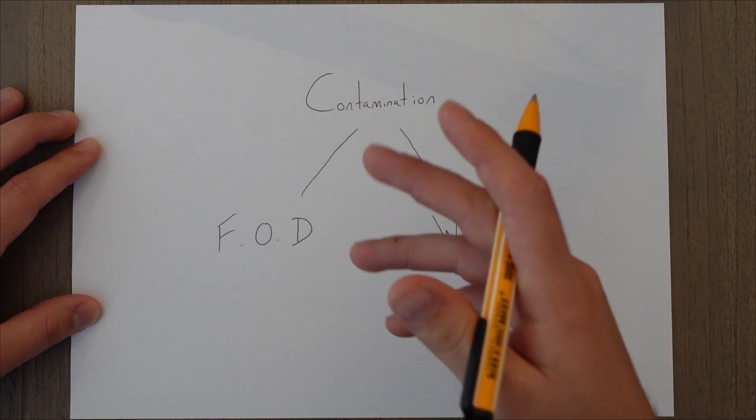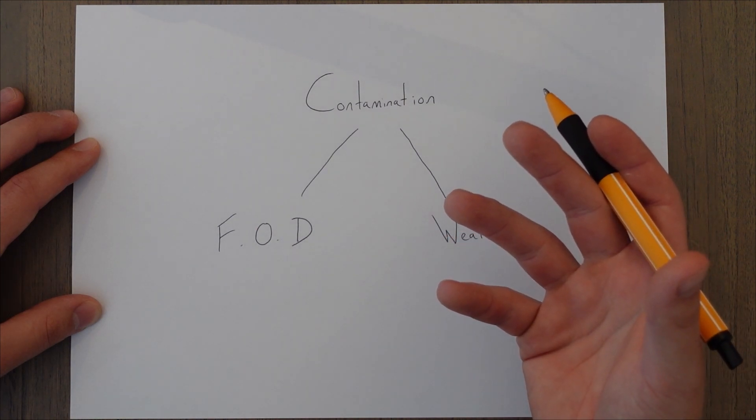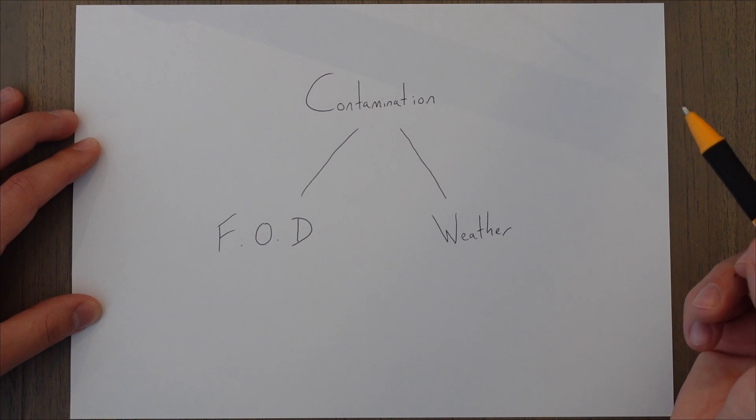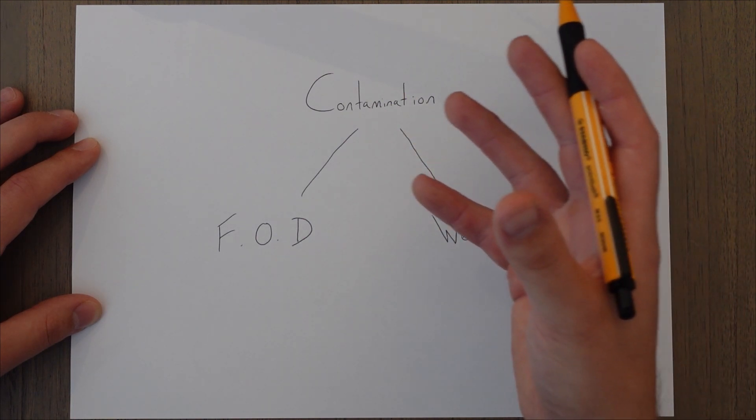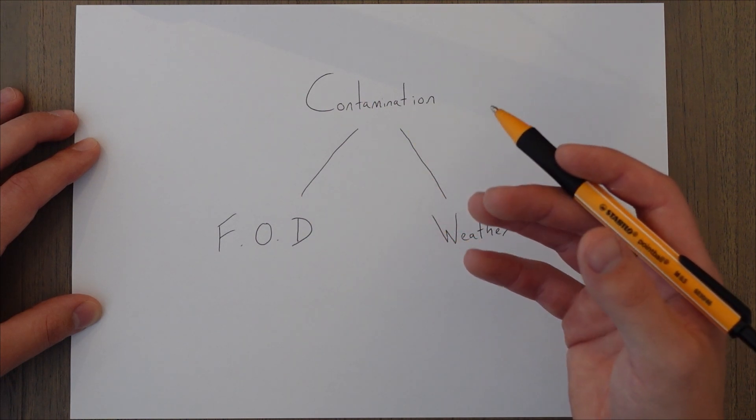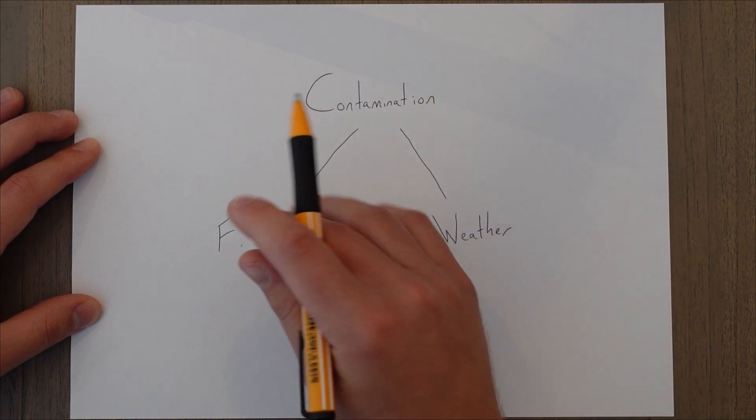This envelope assumes the aircraft is free from contamination or at least within a tolerable level. Contamination is essentially anything that disturbs the airflow around the flight surfaces by modifying the shape and or texture of the aircraft's skin.